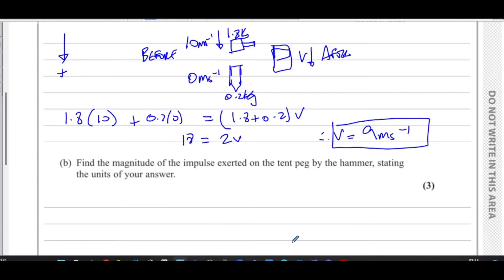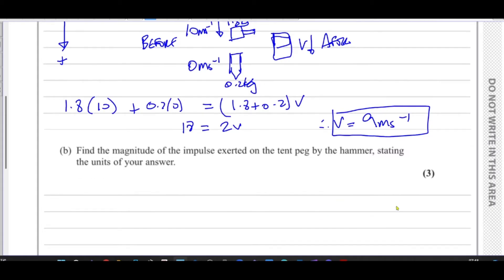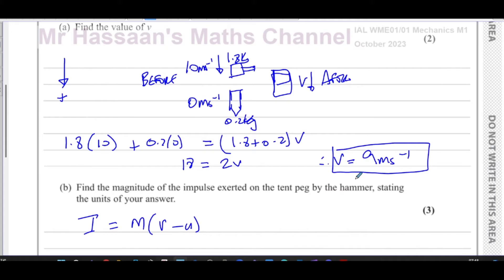Part b asks for the magnitude of the impulse exerted on the tent peg by the hammer. Impulse equals the change in momentum of an object. We can consider the change in momentum of either the tent peg or the hammer — both give the same magnitude. The impulse exerted on the tent peg by the hammer acts downwards, and the impulse exerted on the hammer by the tent peg acts upwards, because the hammer caused the peg to move down and the peg caused the hammer to slow down.